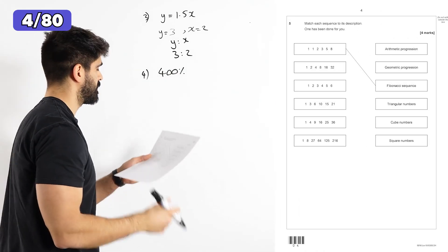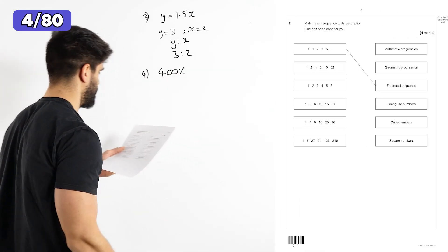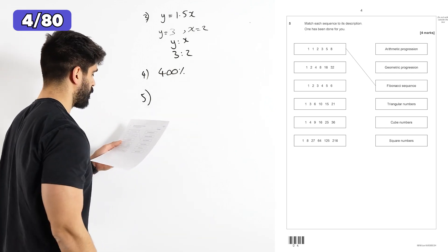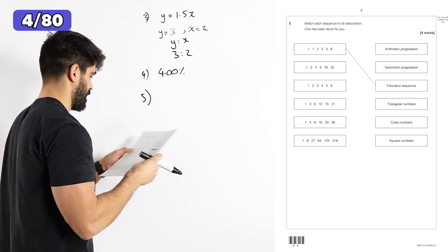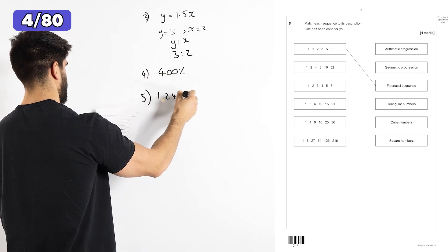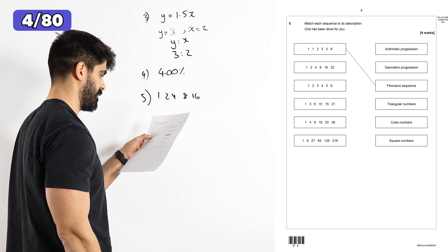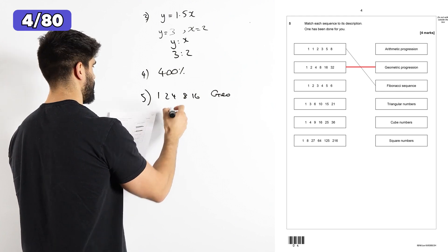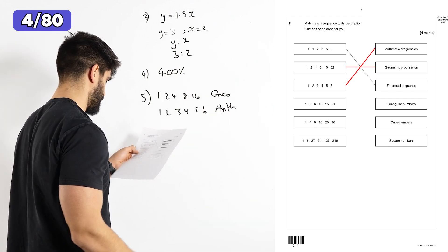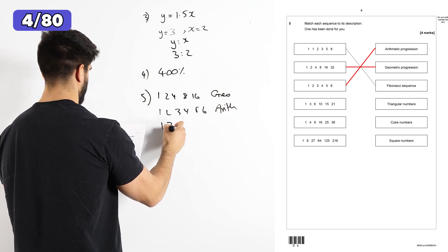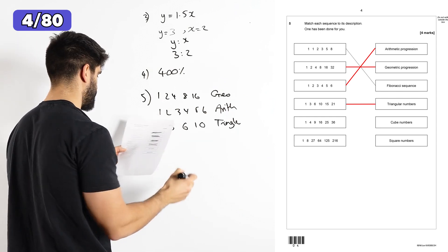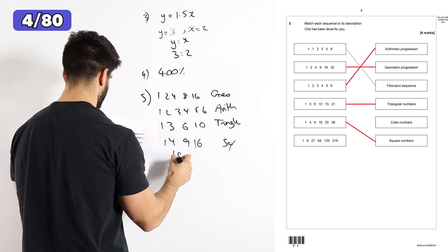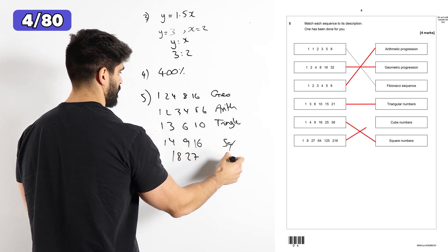Question five says, match each sequence to its description. One has been done for you. So they've said one, one, one, two, three, five, eight is Fibonacci sequence. What's one, two, four, eight, 16? That's the powers of two, but they've only done it as the geometric progression. Then we have one, two, three, four, five, six. That's an arithmetic progression. The next one's one, three, six, 10. That one's triangular numbers. One, four, nine, 16. These are obviously the square numbers. And the last one, one, eight, 27 are the cube numbers.